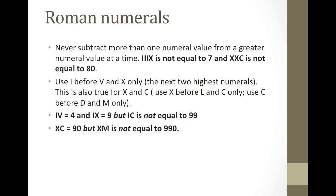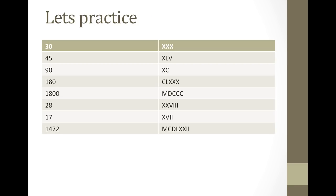Use i before v and x only — the next two highest numerals. This is also true for x and c: use x before l and c only. Use c before d and m only. For example, iv equals 4 and ix equals 9, but ic does not equal 99. xc equals 90, but xm is not equal to 990. Let's practice: 30 is written as xxx, and you can continue going through and finding these values.